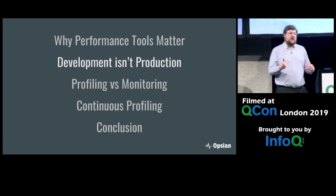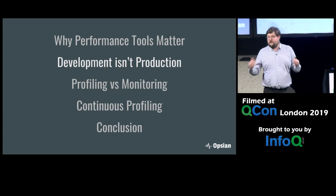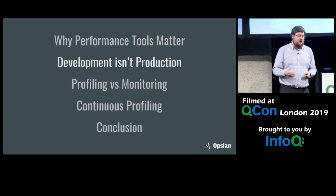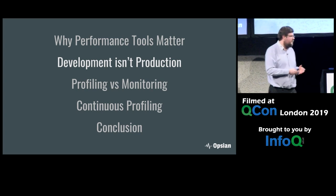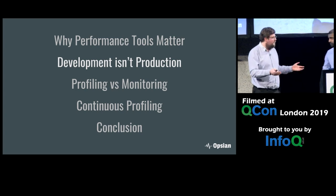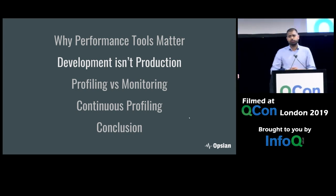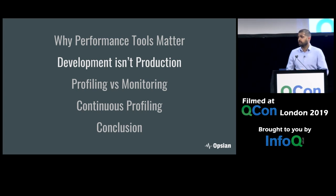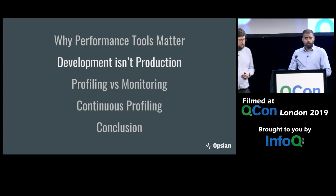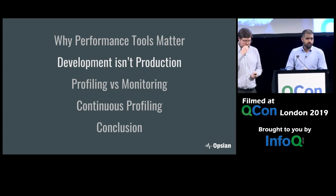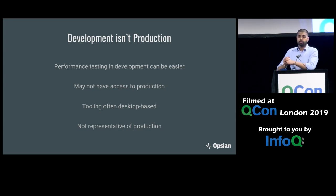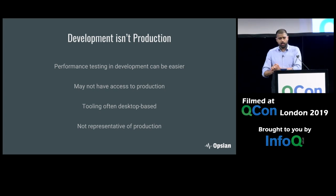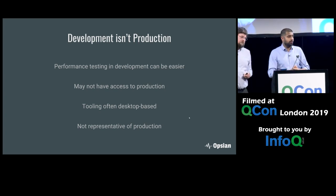If we do testing in development for correctness of our programs, why can't we just do that for performance problems as well? Well, from a performance point of view, testing in development is not representative of production. Our goal for performance testing is to remove bottlenecks from production — to make production go quicker or produce less waste. If we're trying to make production go quicker, we need to do our performance testing in production.